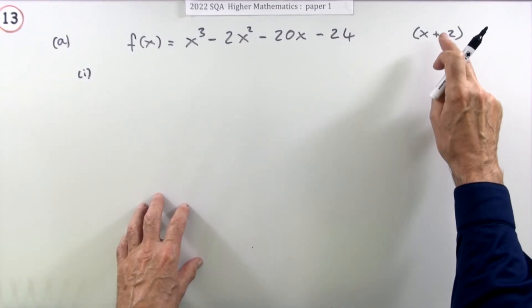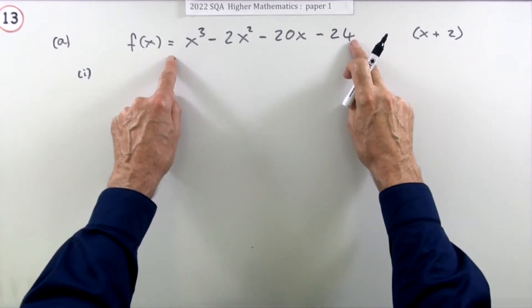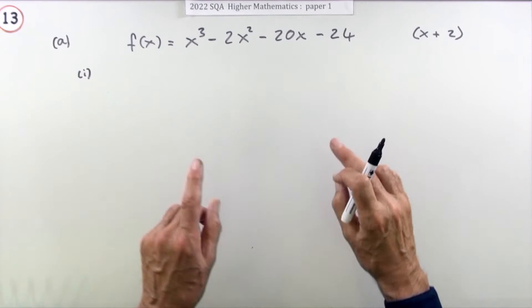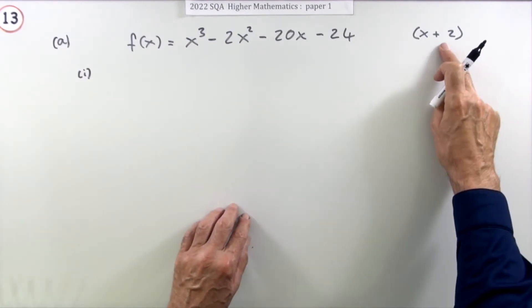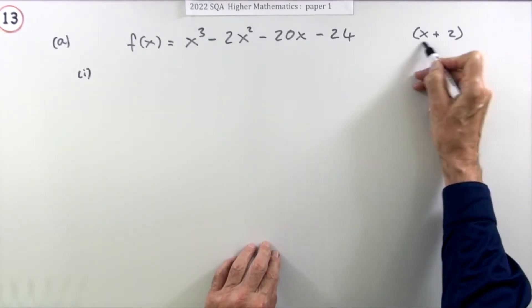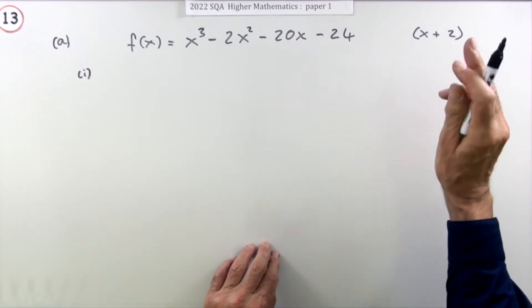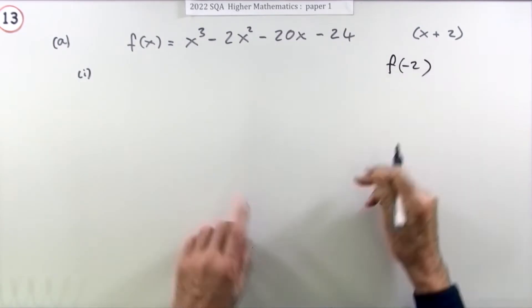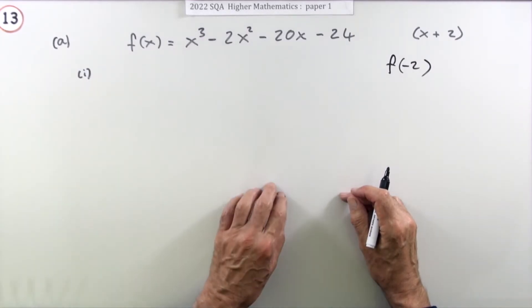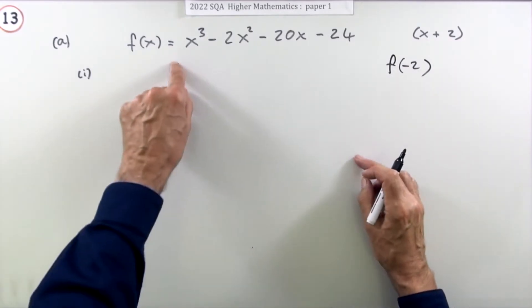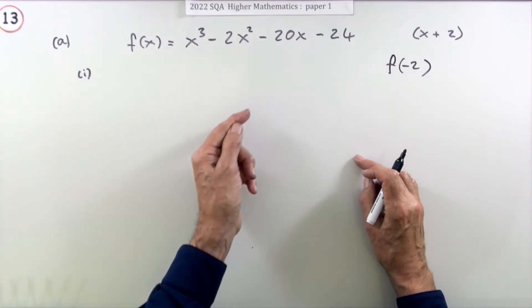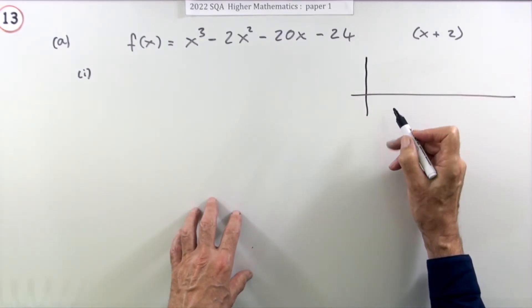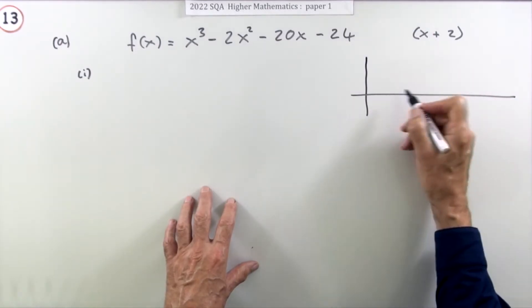Showing something is a factor means it divides in exactly, so the remainder is zero. You set out a synthetic division table to show the remainder is zero. There's also the factor theorem: the expression will be a factor if substituting the value of x that makes it zero — in this case negative two — into the function gives zero. However, since you need to continue and find the other factor, the division table is the better approach.